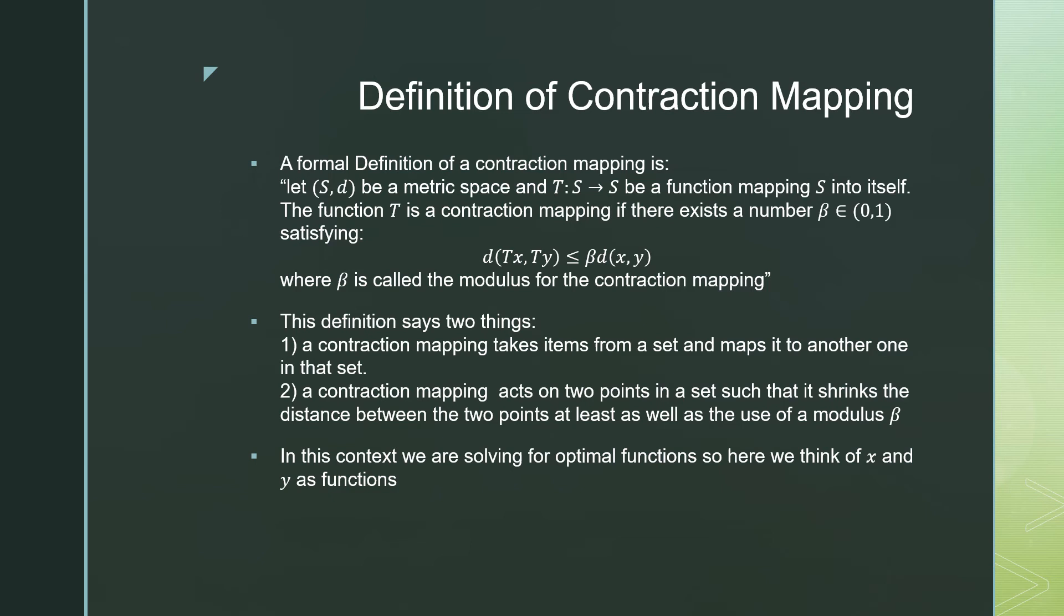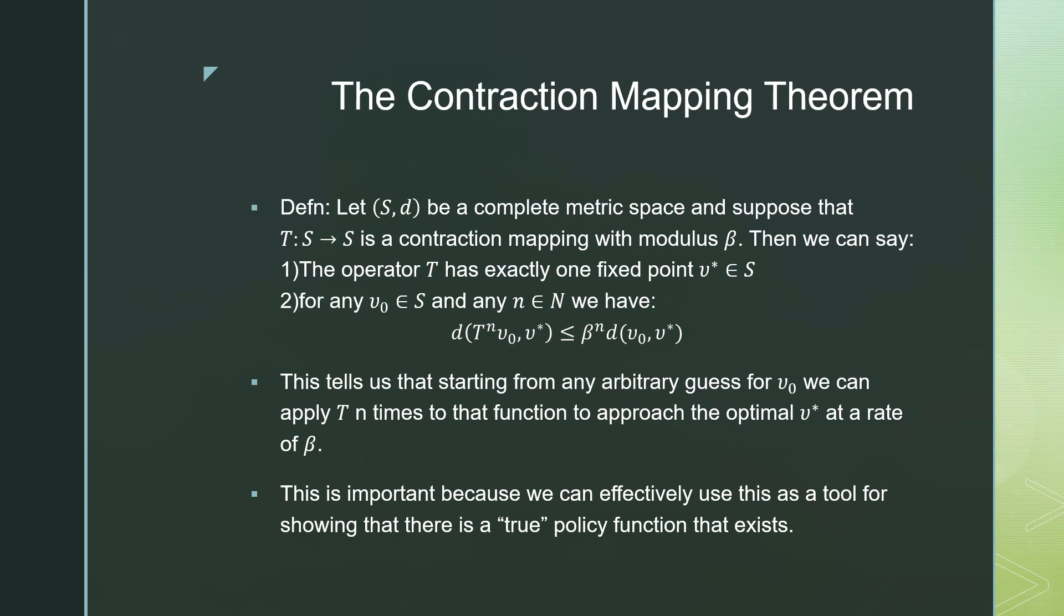However, the use of this contraction mapping is with reference to functions, not necessarily points. So now let's define the contraction mapping theorem. For a formal definition, let S,D be a complete metric space and suppose that T maps S to itself is a contraction mapping with modulus beta. We can then say that the operator T has exactly one fixed point v* contained in S, and for any v0 contained in S and any n contained in our natural numbers, we can say that the distance between our T acting on our v0 n times and our optimal v* is going to be less than or equal to our beta acting on our distance between our initial guess for v0 and v* n times.